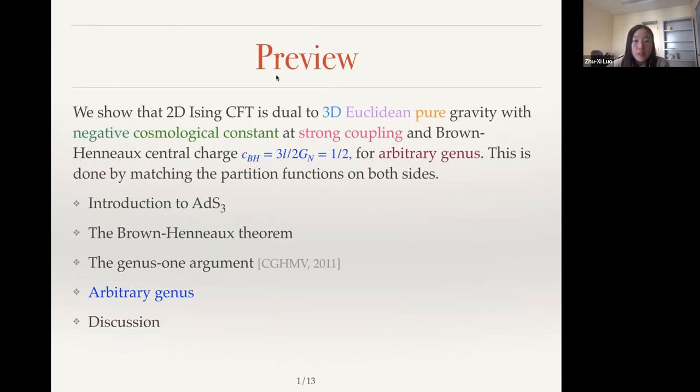We would like to study the gravity dual of 2D Ising CFT. It is dual to a three-dimensional pure gravity. There are a lot of adjectives describing this gravity. This gravity is three-dimensional, in Euclidean signature, it's pure, namely there's no matter field. It has negative cosmological constant, or we call it in the anti-de Sitter space. It is at strong coupling or in a quantum regime. And it has a Brown-Henneaux central charge C equals 3L over 2G equals one half. This duality is for arbitrary genus, and we establish this duality by matching the partition functions of the gravity side and the CFT side.